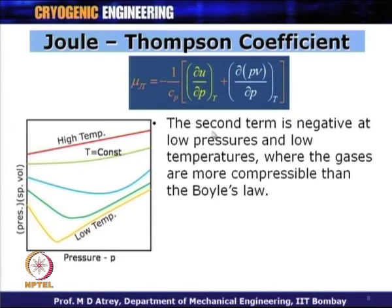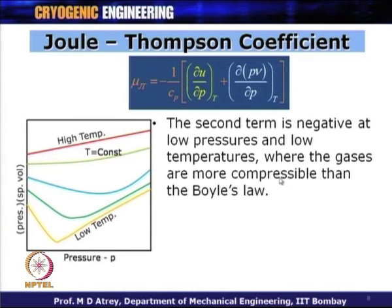In the low-pressure, low-temperature region, when the gas is expanded, the volume increase is more because the gases are more compressible. Therefore, PV increases and del(PV) by del P is negative, which makes mu_JT positive. Expanding the gas in the low temperature and low pressure region will always result in cooling when subjected to isenthalpic expansion.